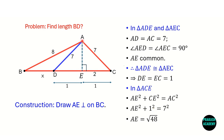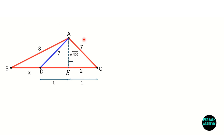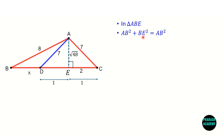Now I know AE = √48. Let us consider triangle ABE and apply the Pythagoras theorem again: AE² + BE² = AB². AE is √48, so root 48 squared is 48. BE is x + 1 (since BD = x and DE = 1), so BE = x + 1. AB is 8 units, so AB² = 64. The equation becomes: 48 + (x + 1)² = 64.